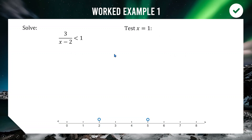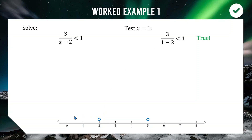Testing x = 1 (left of 2): substituting gives 3/(1 − 2) = −3, and −3 < 1 is true. So values less than 2 are included in our solution.